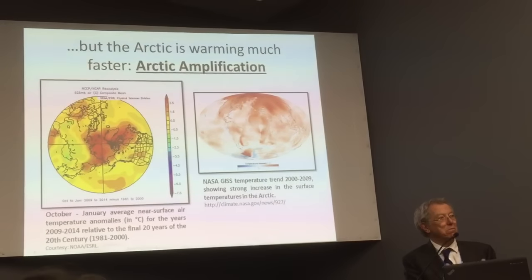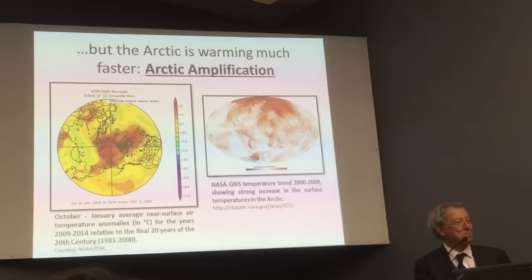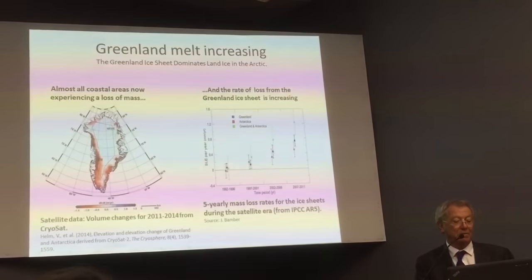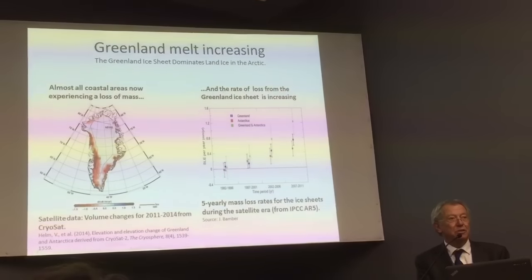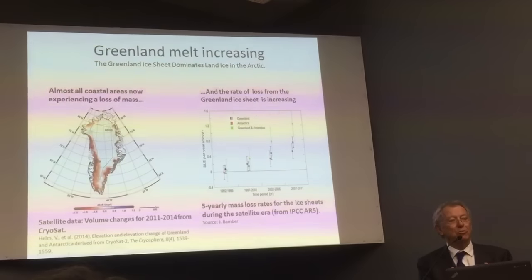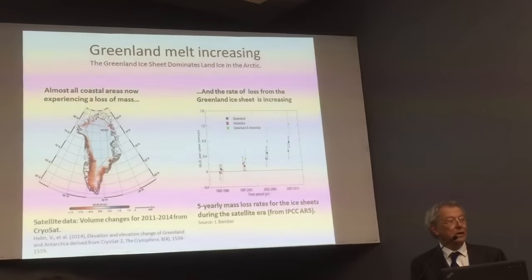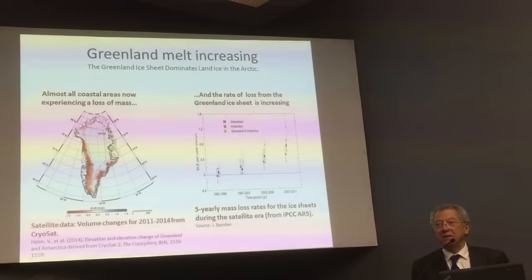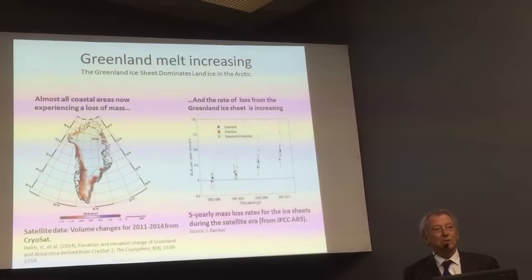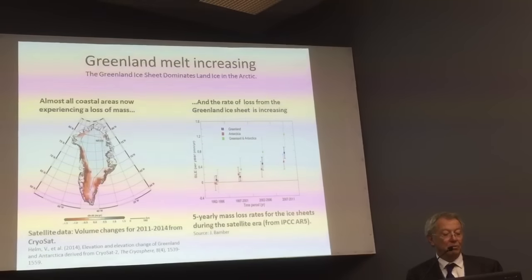I'm going to disappoint myself and you by not attempting the physical explanation behind this — there are many different reasons why it is happening. But in addition to worrying about the overall temperature, we need to look at the loss of ice. First of all looking at the ice based on land, it's the Greenland ice sheet that is the single most important, and for planetary behaviour, critically important.